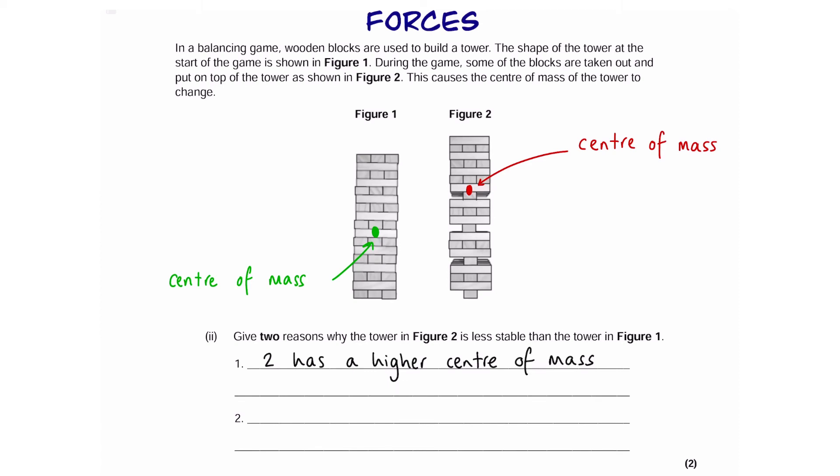So, the first part is, tower 2 has a higher center of mass, which makes it less stable. The next thing is comparing the bases. We can see that figure 1 has a much wider base compared to figure 2. Again, that means figure 1 is more stable. So, figure 2 has a narrower base, making it less stable than figure 1.